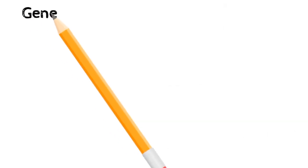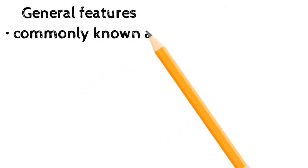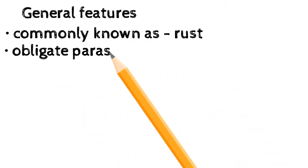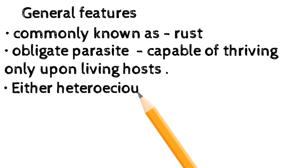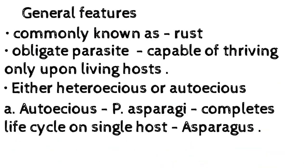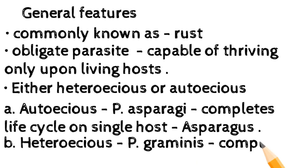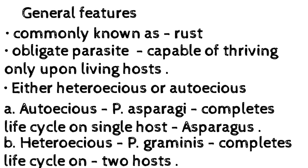General features: commonly known as rust. Obligate parasite, capable of thriving only upon living hosts. Either heteroecious or autoecious. A) Autoecious — P. asparagi completes its life cycle on a single host, asparagus. B) Heteroecious — Puccinia graminis italica completes its life cycle on two hosts.